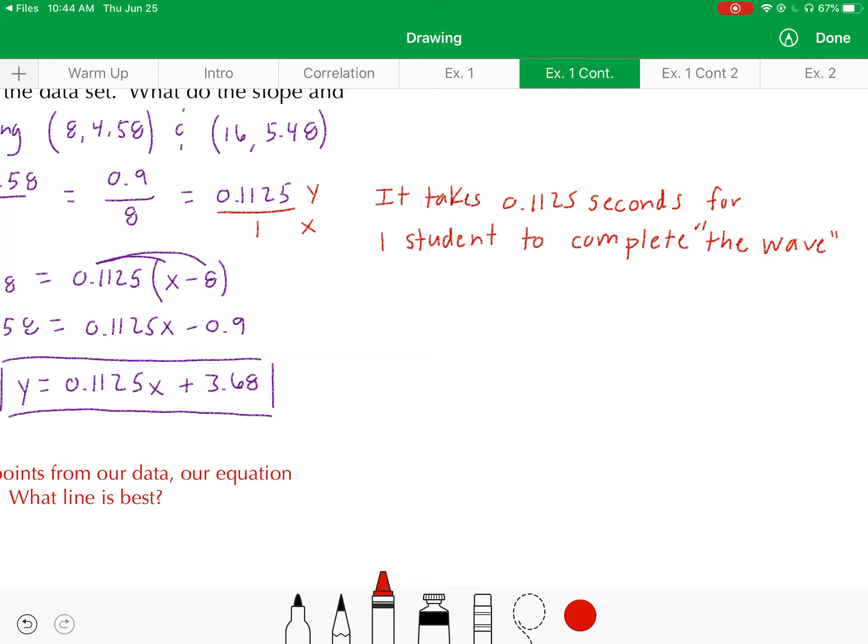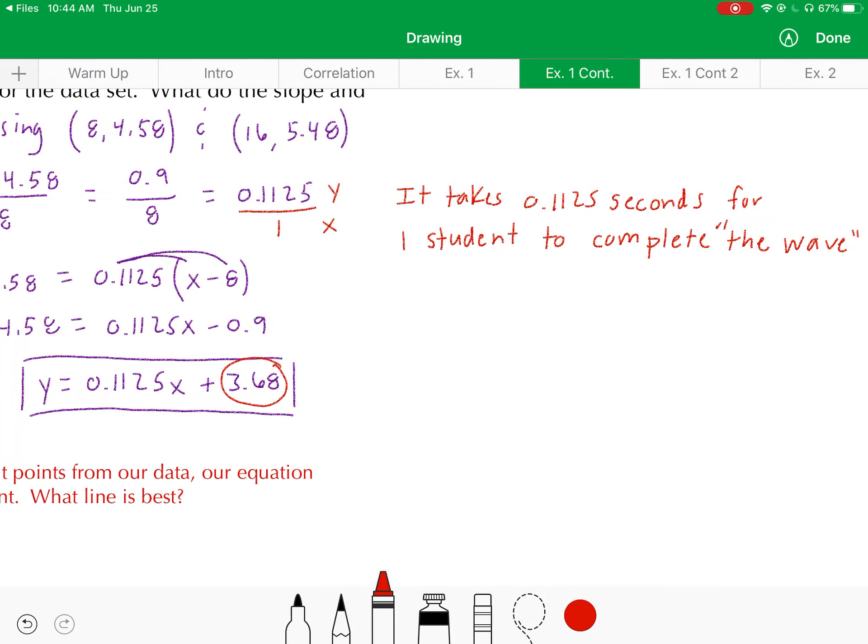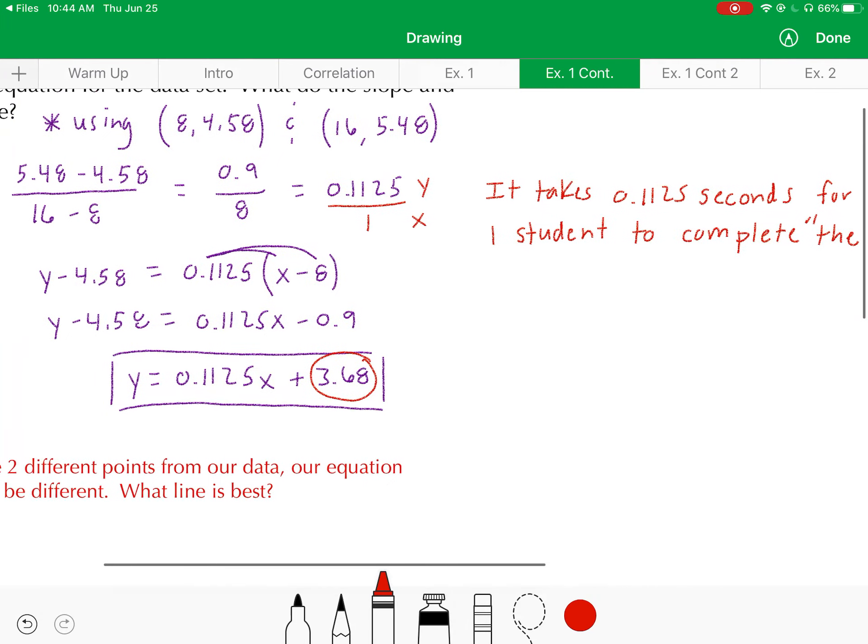Now in terms of the y-intercept here, our y-intercept is this 3.68. If you think, a y-intercept is referring to when x is zero, so in this case x being zero doesn't really apply because you can't have zero students doing the wave here. But in other scenarios having zero of the particular x value might be necessary. Basically you'd be saying it takes zero students 3.68 seconds to do the wave, which just doesn't apply in this situation.